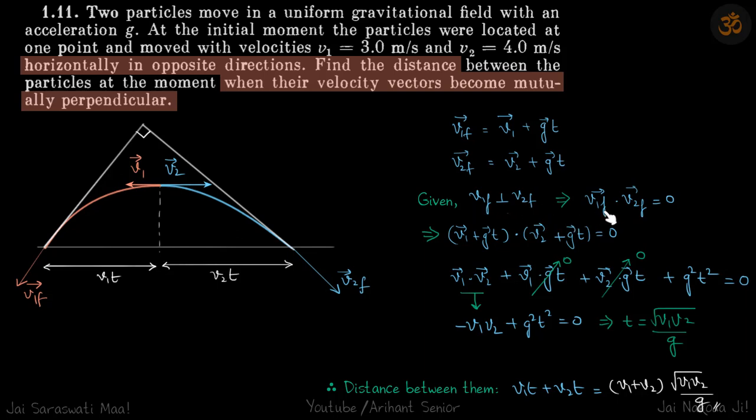They are perpendicular so we do the dot product as zero, which will give this quantity. Here v1 dot v2 is minus v1 v2 because the angle between them is pi. v1 and g are perpendicular so dot product is zero. Similarly v2 and g are also perpendicular, and we get our final term g square t square equals zero.